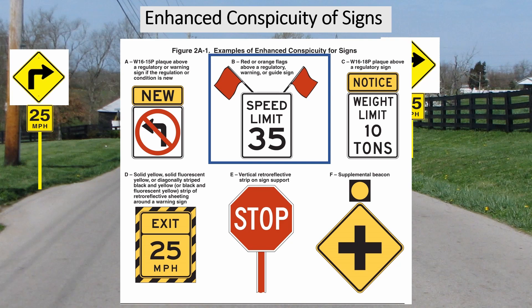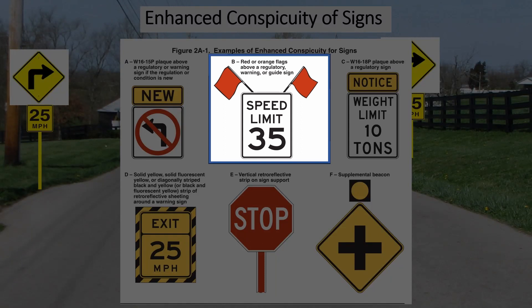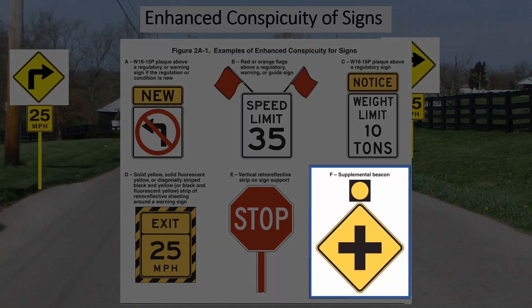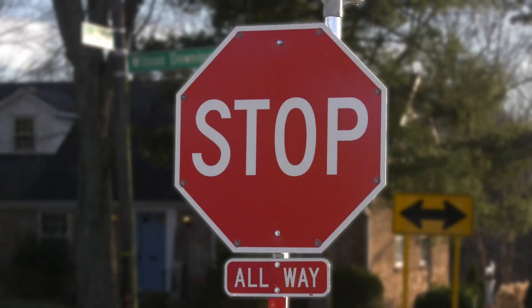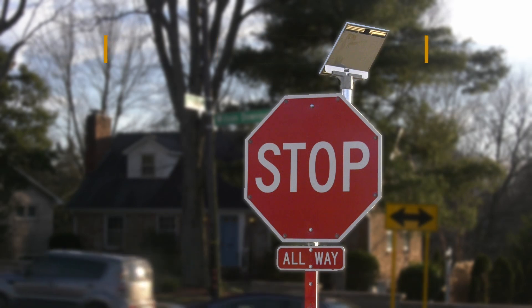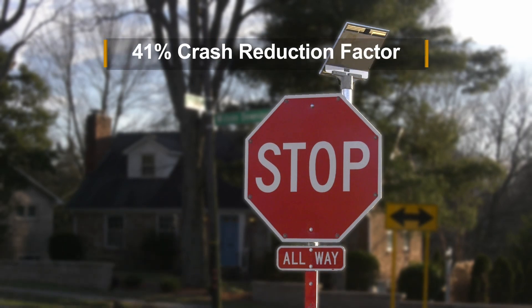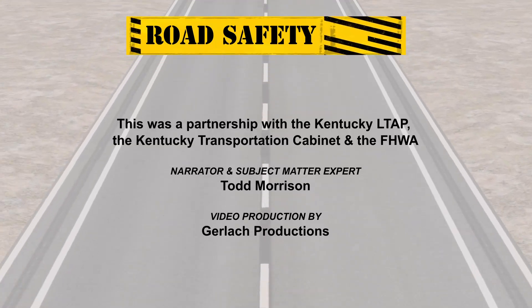Figure 2A-1 from the MUTCD has a couple more options. You could add one or more red or orange flags above a sign. You could add a supplemental beacon or an LED sign. Replacing a regular stop sign with an LED one leads to a 41% reduction in crashes.